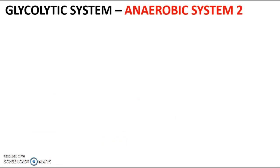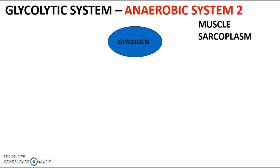The glycolytic system is the second anaerobic energy system. Once we've depleted our phosphocreatine store during an explosive action, the next fuel we use comes from this system. The name is helpful — it's called the glycolytic system because the fuel we use is glycogen. When you eat pasta or bread, these carbohydrates are stored in our muscles and liver as glycogen, and this system takes place in the muscle sarcoplasm.